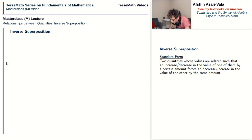The equation for inverse superposition in standard form is: q2 is equal to k — which is a constant that has a known value — minus q1. The key part is that q1 is being subtracted.